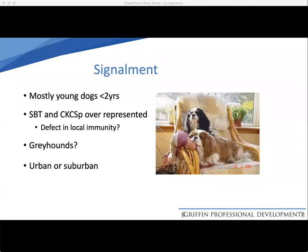Signalment: any dog can be affected, but it is more commonly found in young dogs less than two years. This may be because they're more curious and more likely to eat things externally, more likely to pick up slugs or snails in the garden. There's also a higher prevalence in Staffordshire Bull Terriers and Cavalier King Charles Spaniels, possibly due to a defect in local immunity. There may also be a higher risk in greyhounds, perhaps because they're often housed together in close contact, increasing the chance of transmission. It is found in both urban and suburban dogs.